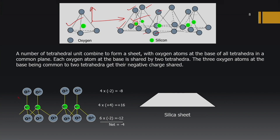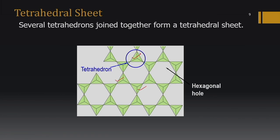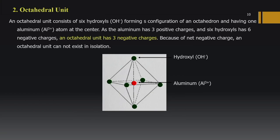The tetrahedral sheet is represented diagrammatically with tetrahedral units and hexagonal holes between them. These hexagonal holes play an important role in the formation of some clay minerals, which will be discussed subsequently. For all descriptions of clay minerals, the tetrahedral or silica sheet is commonly represented by this standard diagram.